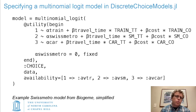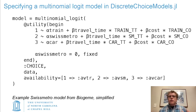Then I specify what column in my data has what choice was made, and I have the data frame or Dagger distributed table that has the data in it. Optionally, you can specify the availability if you have some options that aren't available for all your decision makers — for instance, someone who doesn't live near a train and therefore couldn't make the choice to take the train.